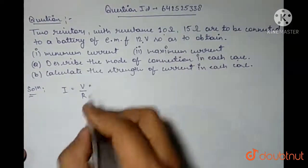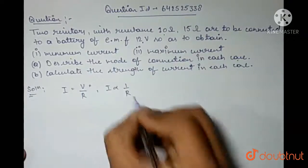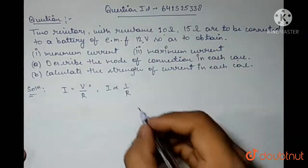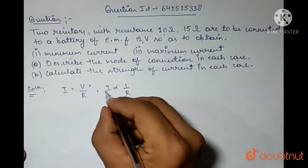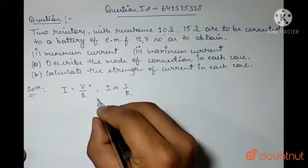Here, the current is inversely proportional to resistance. So, for a minimum resistance, the current should be maximum. For the maximum resistance, the current should be minimum.